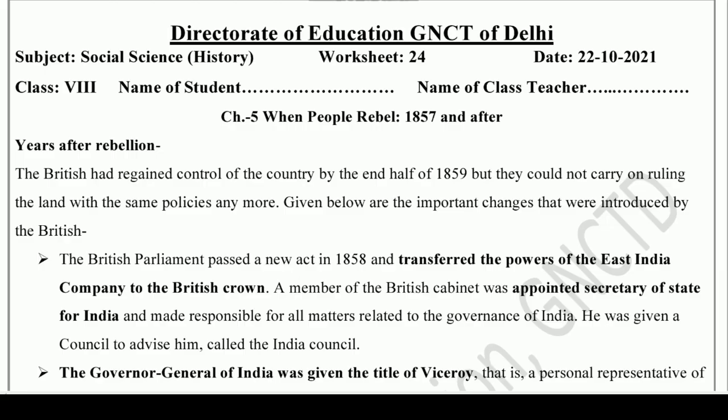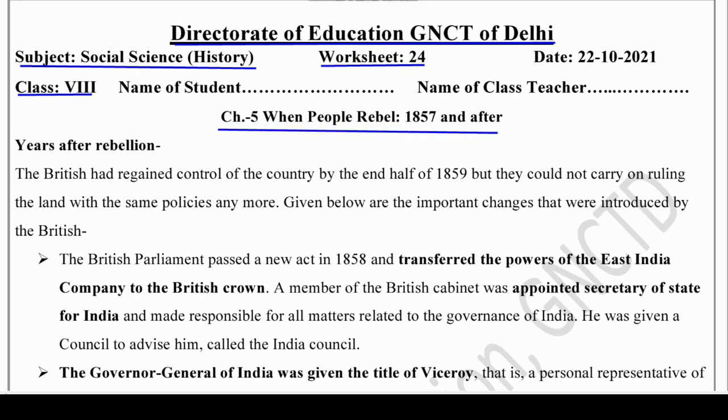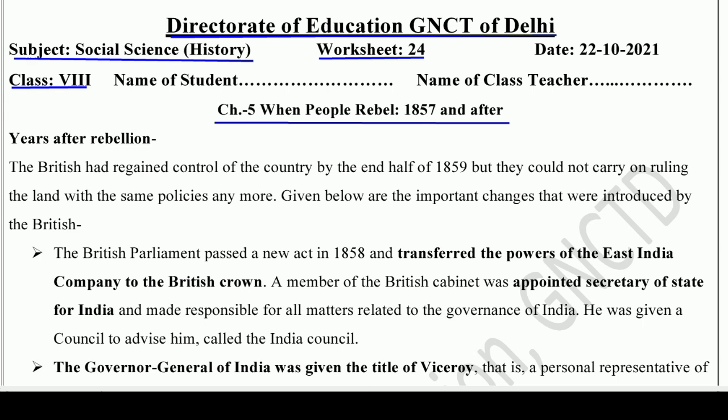Hello and welcome back to Lavneesh Sarki class channel. This is Directorate of Education GNCT of Delhi's worksheet number 24, only for class 8 students. It is taken from the subject Social Science History and we will learn and understand chapter number 5: 'When People Rebel: 1857 and After.'